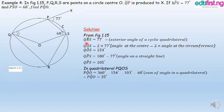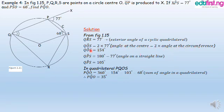Solution from figure 1.15: angle QRS equals 77 degrees — exterior angle of a cyclic quadrilateral, meaning this angle equals the opposite interior angle. Angle QOS equals 2 times 77 degrees equals 154 degrees — angle at the center is 2 times the angle at the circumference. Angle QPS equals 180 minus 77 degrees equals 103 degrees — angles on a straight line.